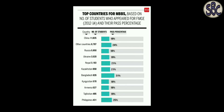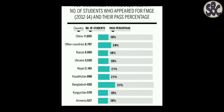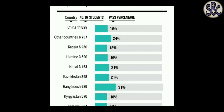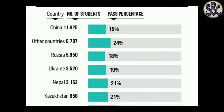Now we are going to look at the top countries for MBBS. This is the Times of India official data showing the passing percentage and number of students who appeared for FMG, country-wise. This data is from 2012–2014, the latest I have. China: 11,825 students appeared for FMG, with a passing percentage of 19%.